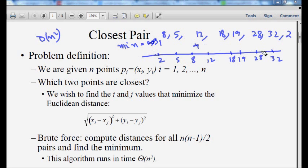Between 28 and 19 it's 9, that's not the minimum. Between 32 and 28 it's also not that. So our minimum distance is 1.